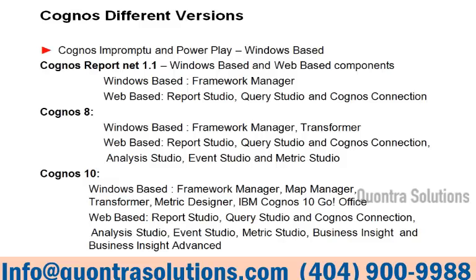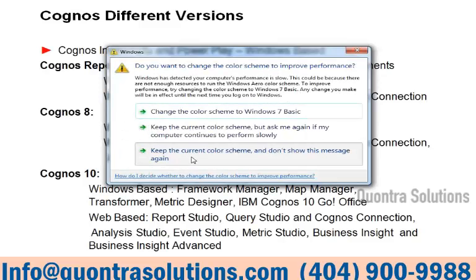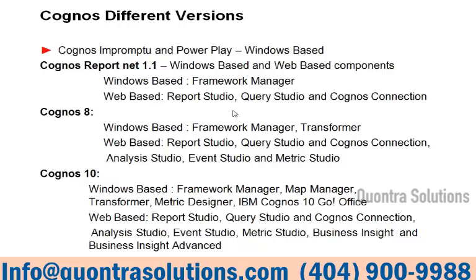Cognos 7.1 has MR1 and MR2 maintenance releases with a few changes. The windows-based tool is Framework Manager, where — similar to how a universe is created in Business Objects — we create a model. The web-based tools are Report Studio, Query Studio, and Cognos Connection. Report Studio is used for advanced reporting, Query Studio for ad hoc reporting, and Cognos Connection is the administration area for all admin activities.